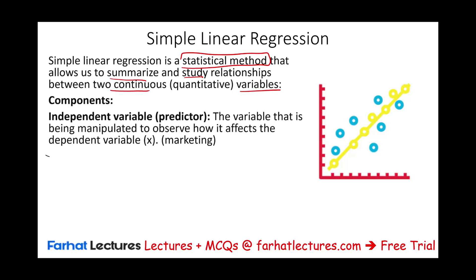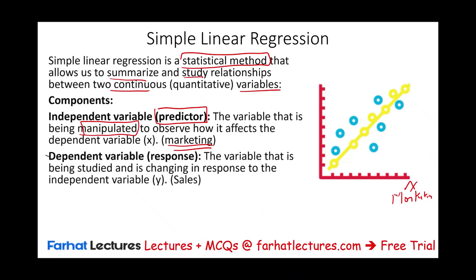We have what's called the independent variable, also called the predictor — the variable that's being manipulated to observe how it affects what we call a dependent variable. The classic example for the independent variable from a business perspective is marketing. On the x-axis, the independent variable is marketing, and we are going to increase or decrease marketing to observe the effect on sales. Sales is the y variable — the variable that's being studied and is changing in response to the independent variable.